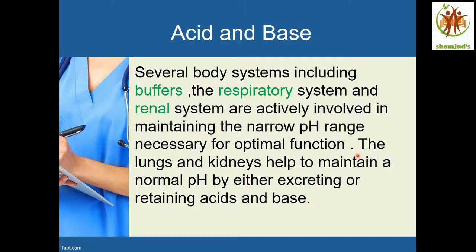In the lungs, the body will hyperventilate the patient and remove all carbon dioxide. This reduces the production of carbonic acid. If the acid level goes down and the kidney increases base retention, the body will maintain a normal pH.